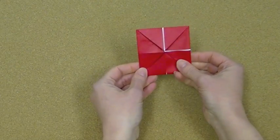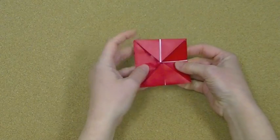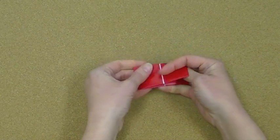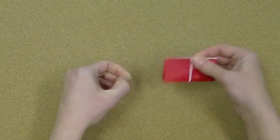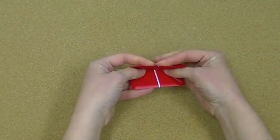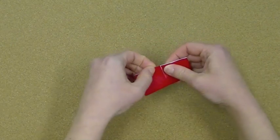So you should have something that looks like this. Now we're just going to fold everything in half so that I can get a good crease. Open it up and fold it in half the other way and get a good crease.